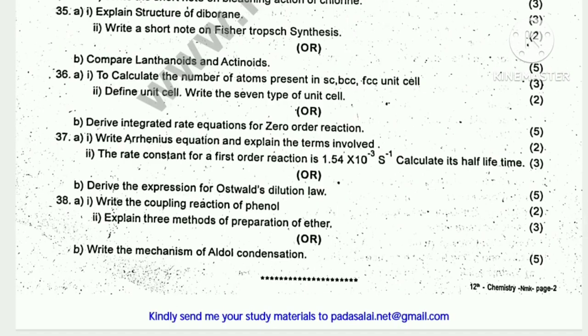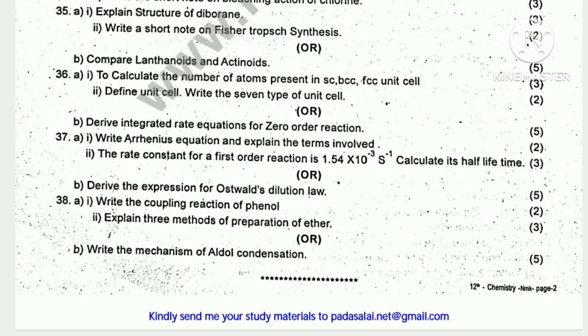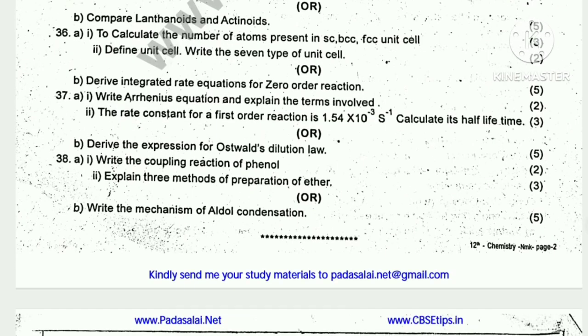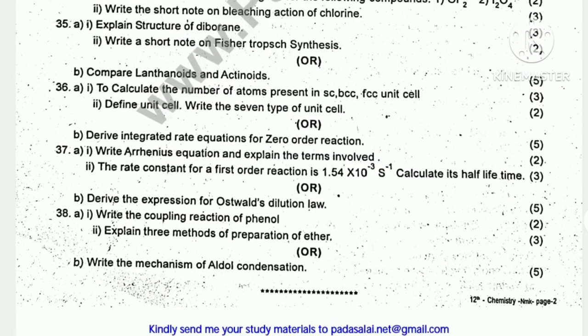Calculate the number of atoms present in SC, BCC, and FCC unit cells. Define unit cell. Write the 7 types of unit cell or integrate the rate equation for zero order reaction. Write the coupling reaction of phenol. Explain 3 methods of preparation of ether. Write the mechanism of aldol condensation.